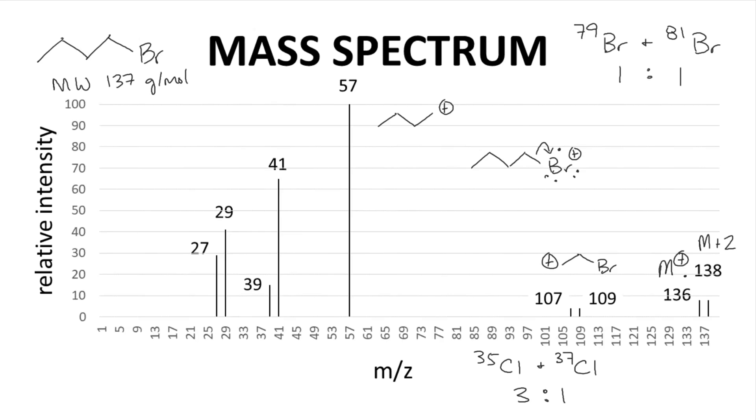So chlorine shows the M and M+2 pattern, but the ratio of M to M+2 is 3 to 1, not 1 to 1 as with bromine.